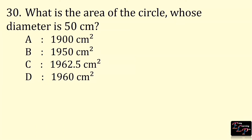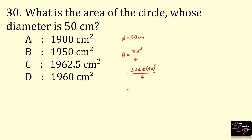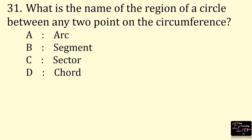What is the area of the circle whose diameter is 50 cm? Diameter is 50 cm. Area of a circle is given by πD² ÷ 4 = 3.14 × 50² ÷ 4 = 1,962.5 cm². The answer is option C, 1,962.5 cm². What is the name of the region of a circle between any two points on the circumference? It is called a segment.